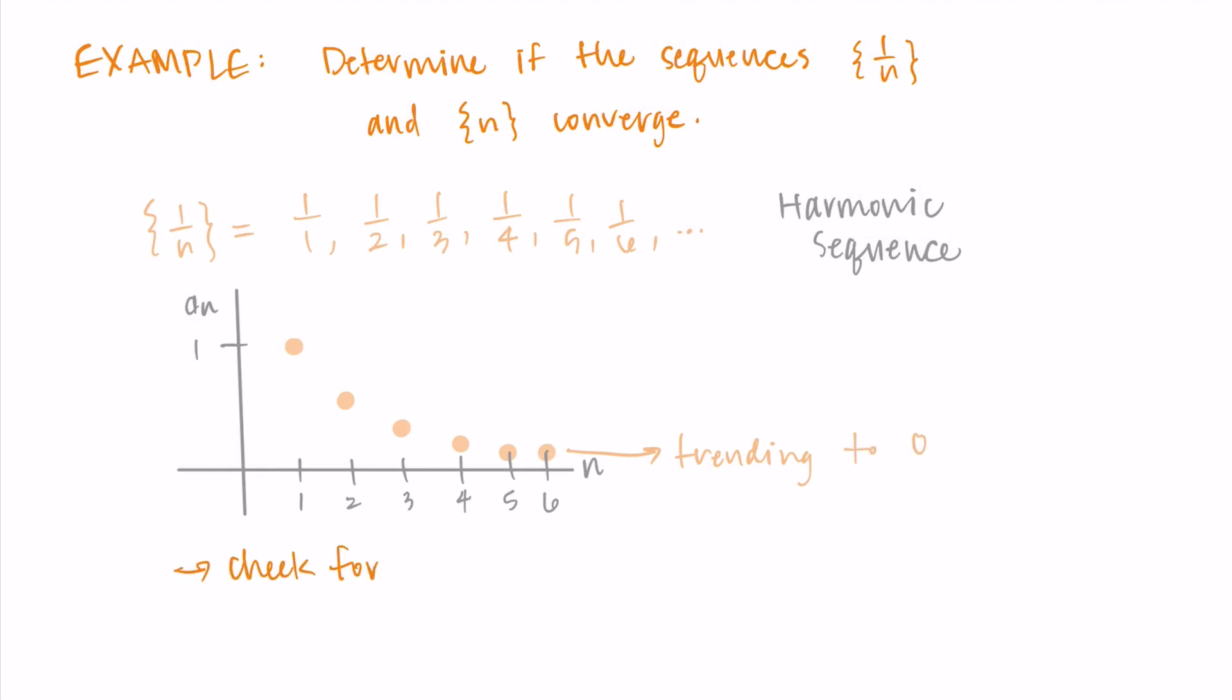Then using the limit, we can check for convergence formally by taking the limit as n approaches infinity of 1 over n. That's of our sequence. And when we increase to infinity, this limit goes to 0. So the solution to this limit is 0. And this means the sequence 1 over n converges to 0.